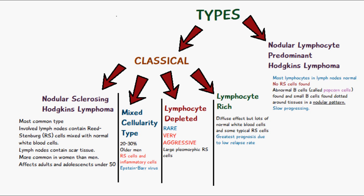The nodular lymphocyte predominant Hodgkin's lymphoma is another type. Here there aren't any Reed-Sternberg cells present, but we have other abnormal B cells called popcorn cells, and also other small B cells found dotted around tissues in a nodular pattern. In this type, most of the lymphocytes in the lymph nodes are normal, but there is a presence of popcorn cells which are abnormal. This is a slow-progressing form of lymphoma.